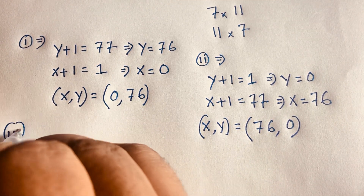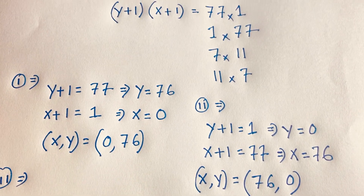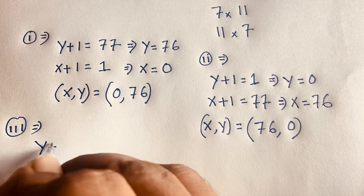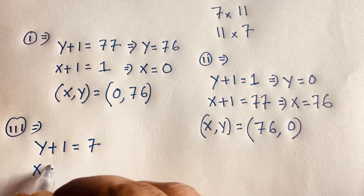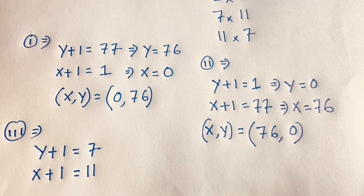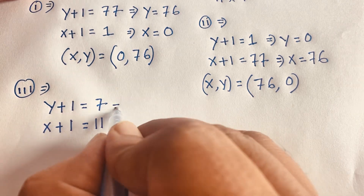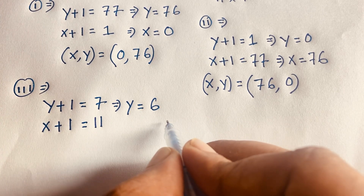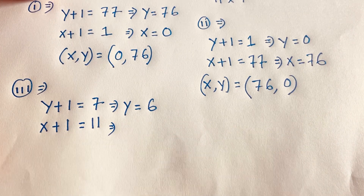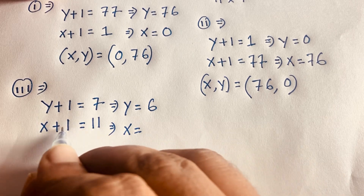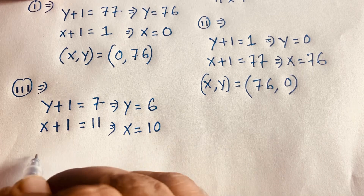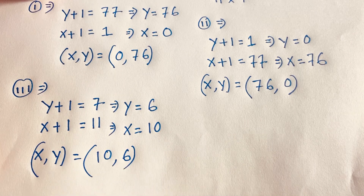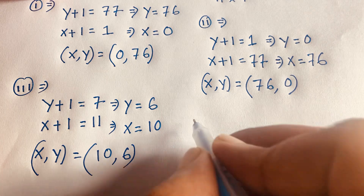Case 3: y plus 1 equals 7 and x plus 1 equals 11. So y equals 7 minus 1 equals 6, and x equals 11 minus 1 equals 10. So our final answer for this case is x = 10, y = 6.